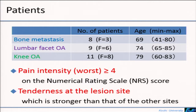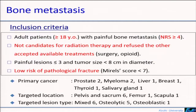The number of patients, their gender, and age are shown on the slide. Inclusion criteria: the patient's worst pain intensity was more than four points and patients have tenderness at the region site. Additional criteria for bone metastasis: patient did not qualify for radiation and refused other treatment. Their risk of pathological fracture was low. Primary cancer target location and targeted region type are shown on the slide.